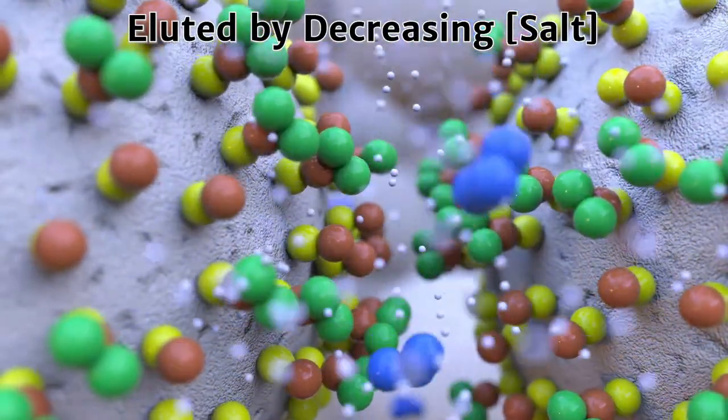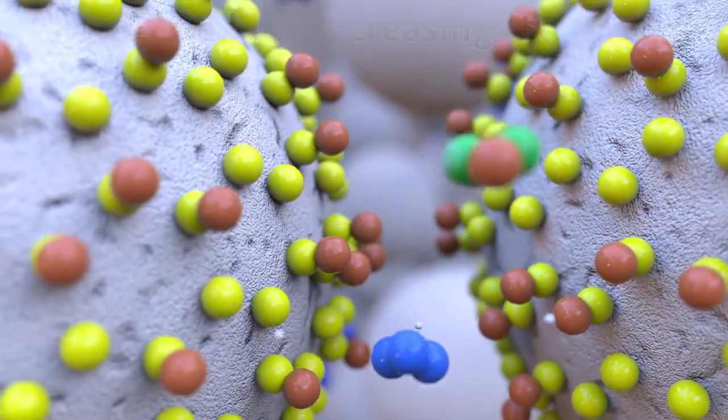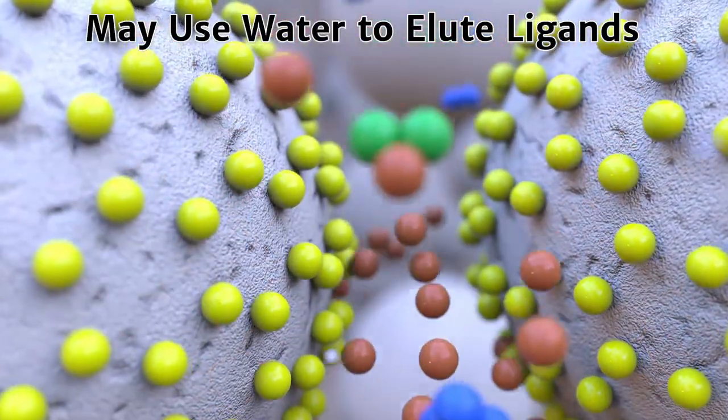After the proteins are bound, they are eluted from resins by decreasing the salt concentration in the solution. In extreme cases, water is used to elute ligands.